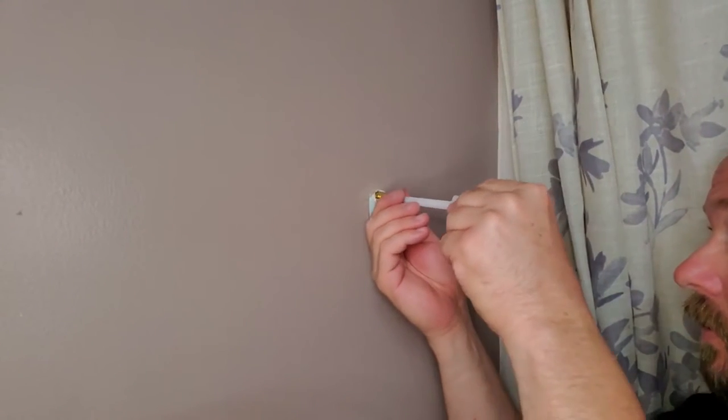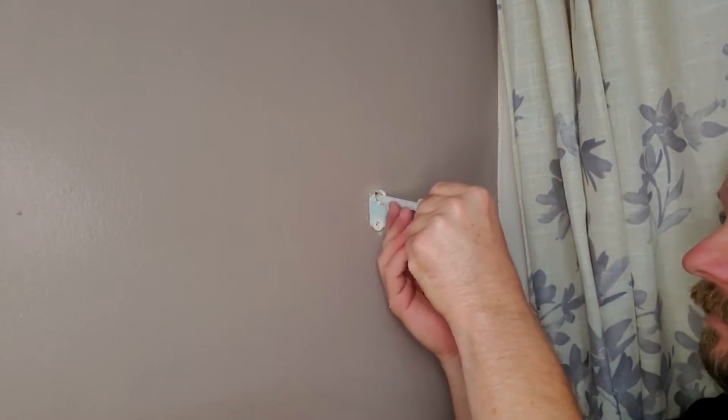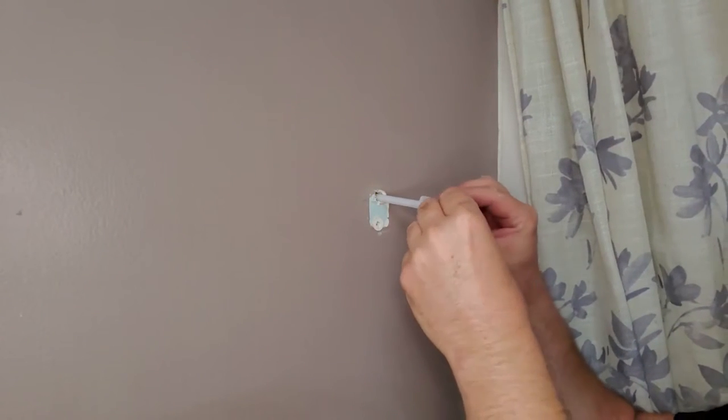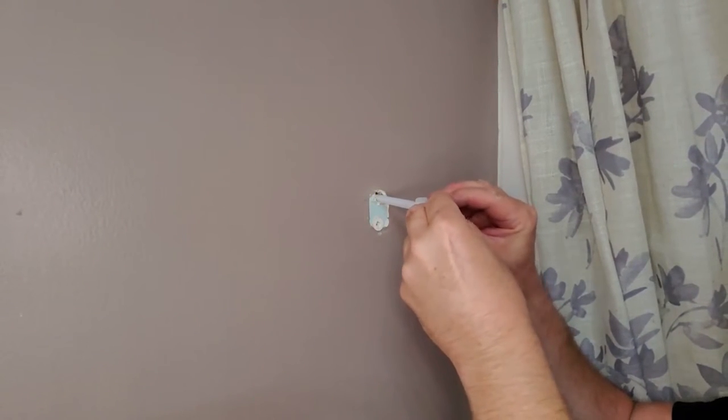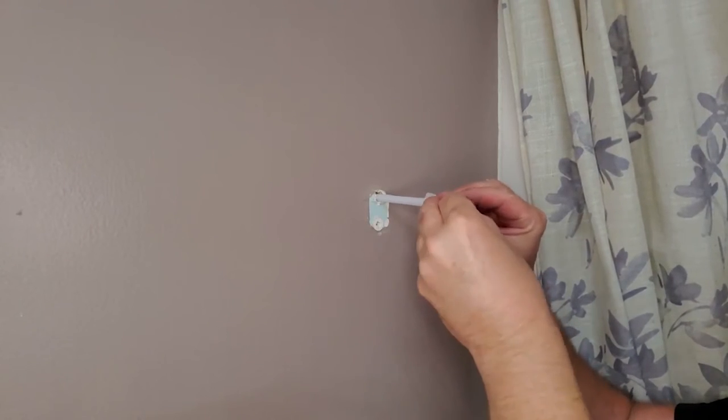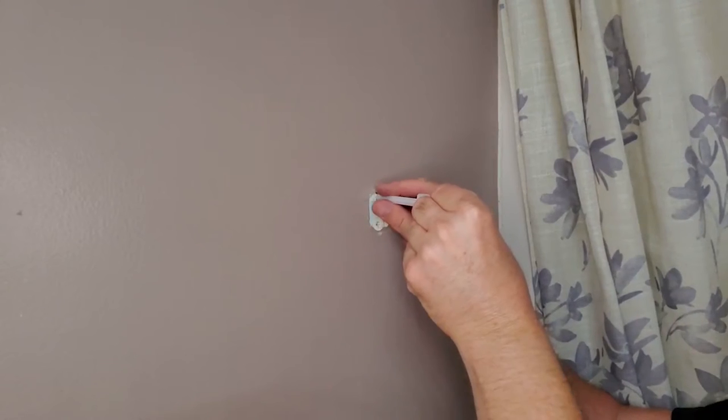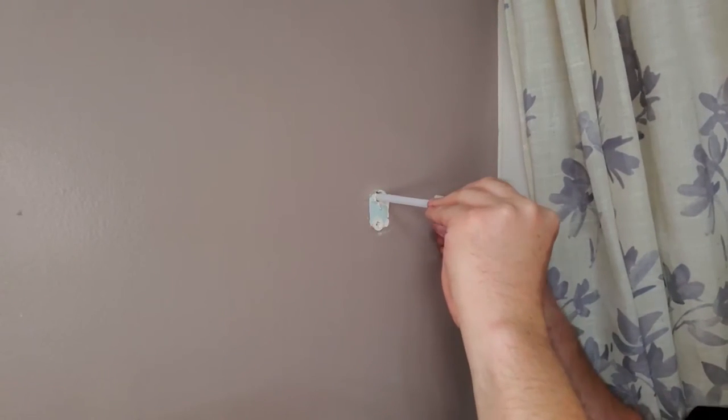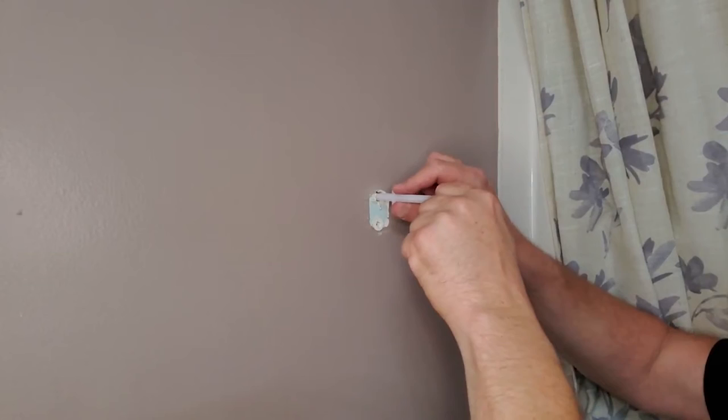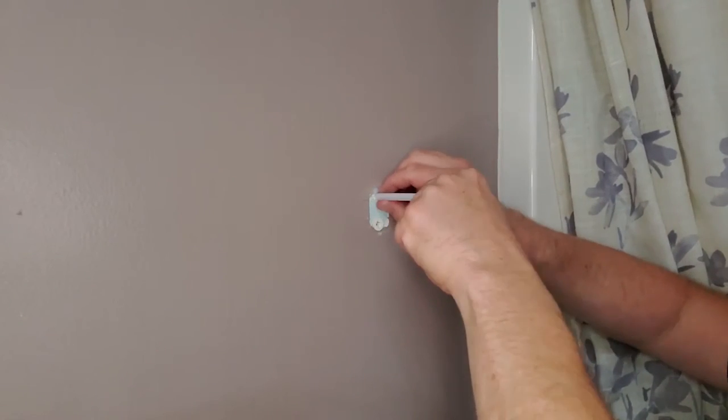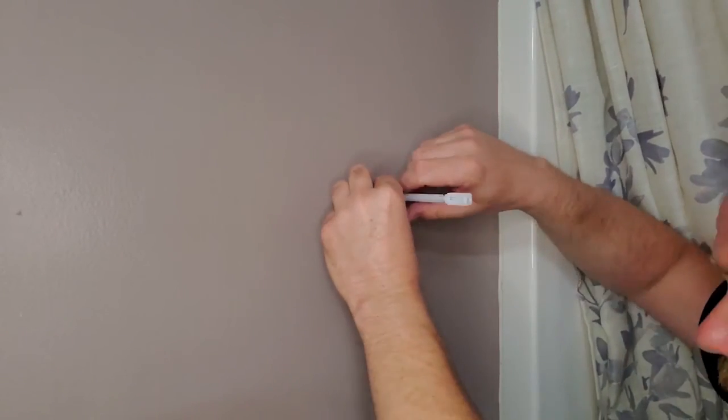Now we're going to straighten it out and shove it in the hole, far enough so we're past the sheetrock. Take the two plastic things and even them out so it straightens out like a tee and pulls against the wall. Then we'll take this little clip and slide it in place, which will lock it in there so it doesn't fall down in the wall.